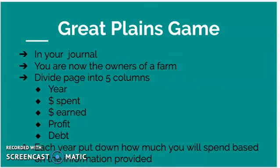You're going to divide your page into five columns. In each column, include the year — year one, year two, year three, year four, year five. The amount of money you spent, the amount of money you earned, your profit, and your debt. After you subtract how much you spent from how much you earned, if you've got money left over in the positive, you have earned money. If not, you might have a debt. Each year, put down how much you will spend based on the information provided.